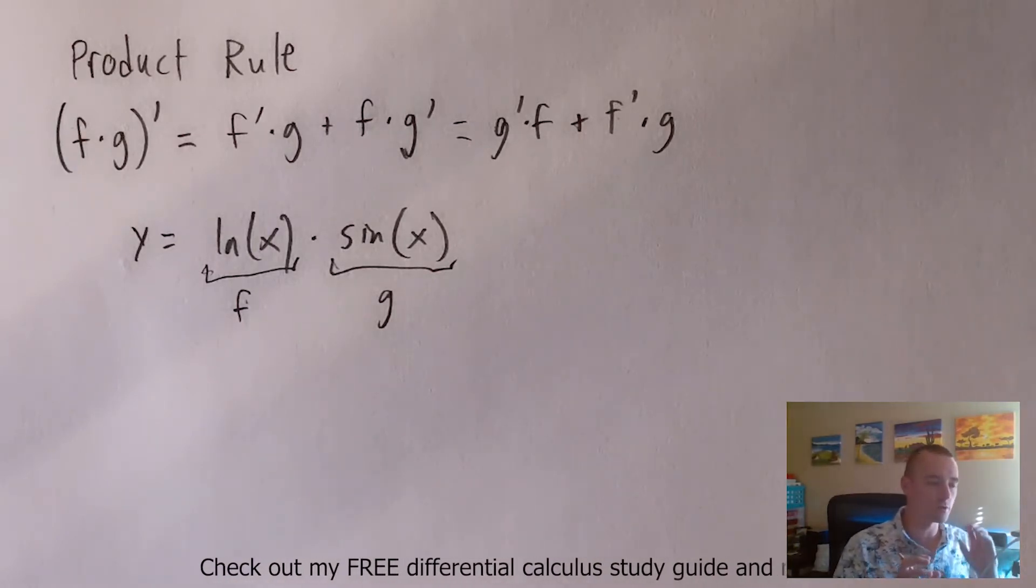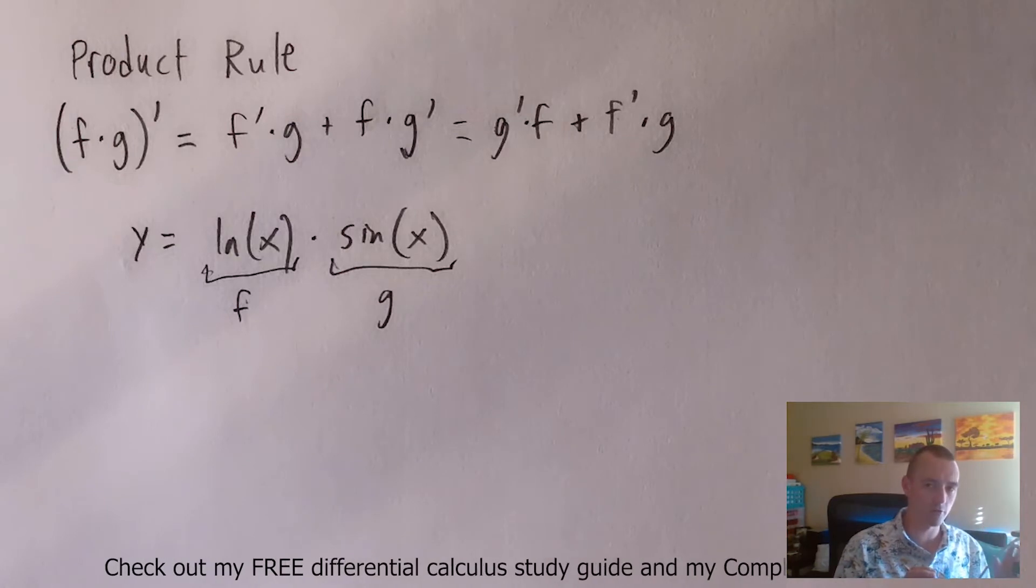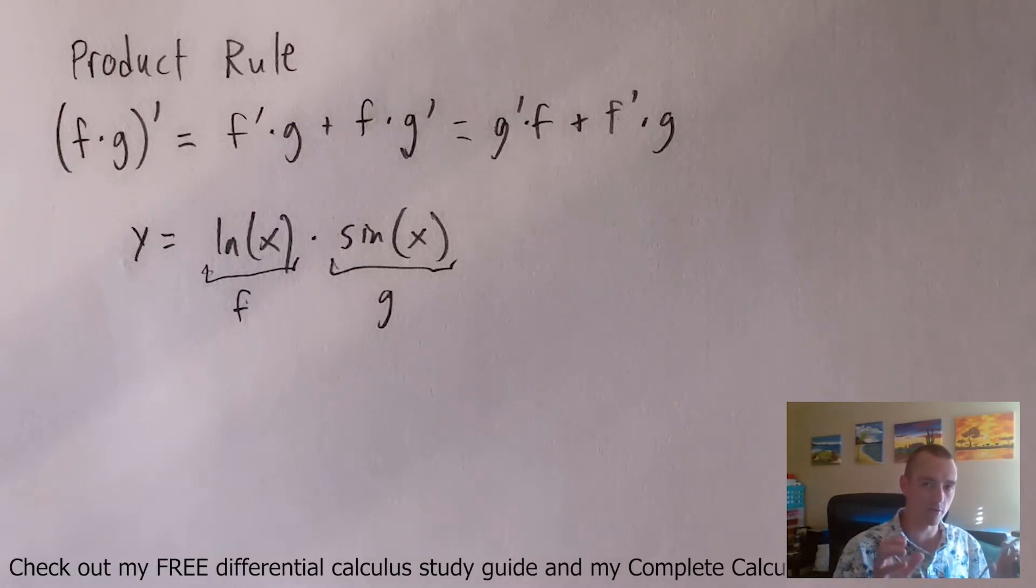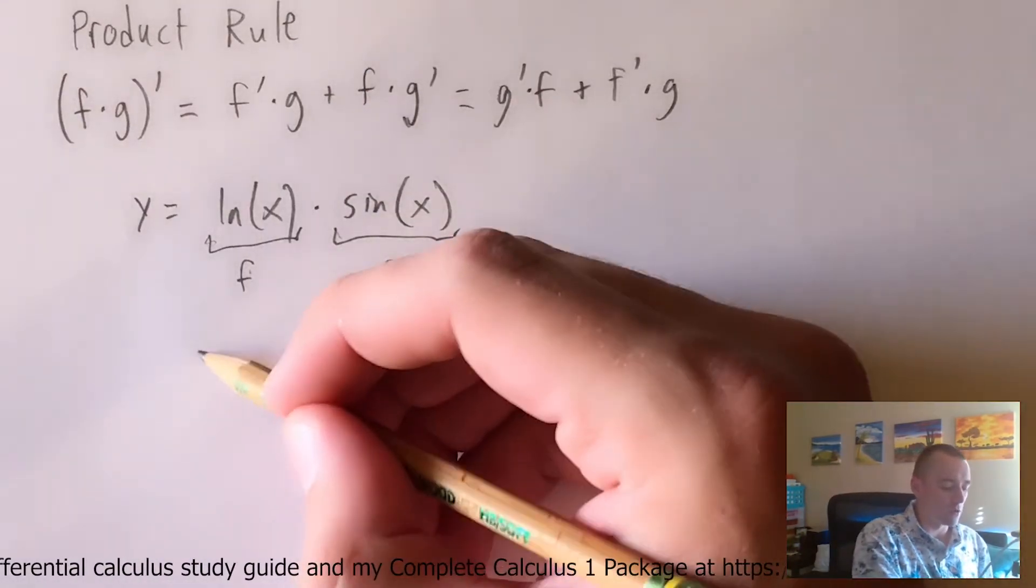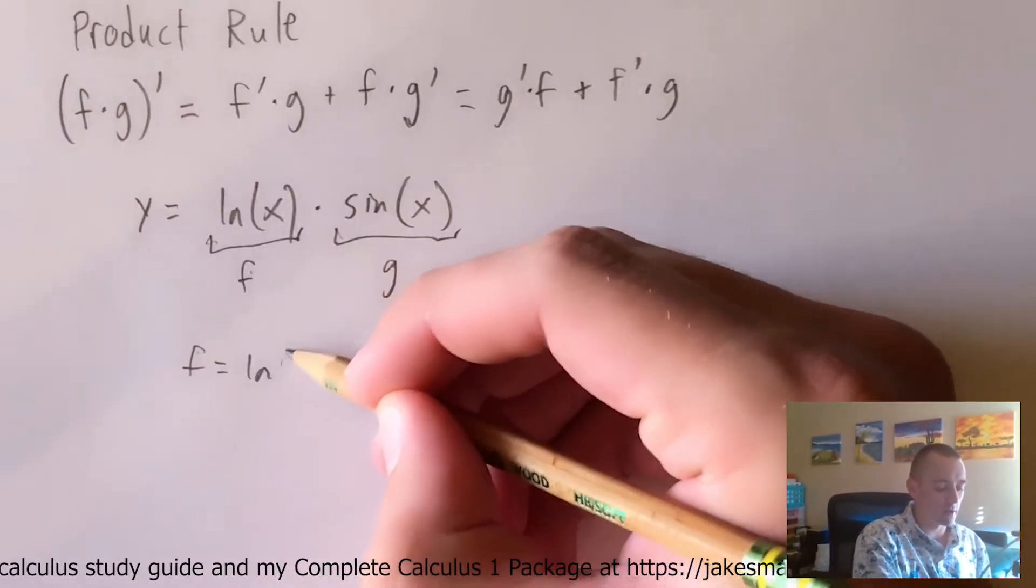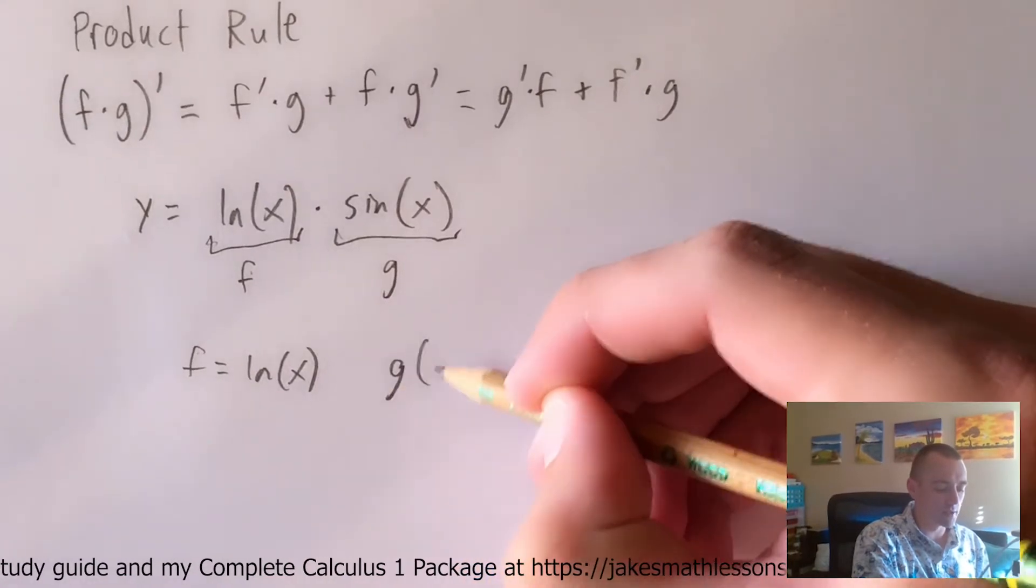All that's important is that you're looking at this as the product of two separate pieces. And as long as you call one of those pieces that is part of the product f, and the other part of your product piece g, it's going to end up working out. So we've called f ln of x in this case, and we've called g sine of x in this case.